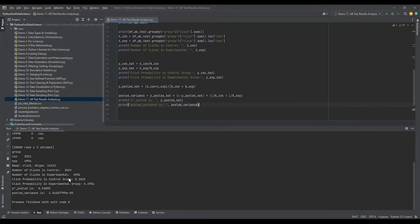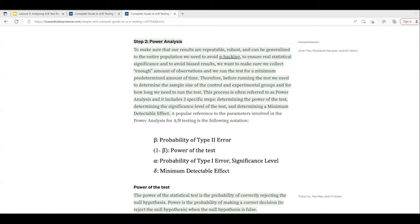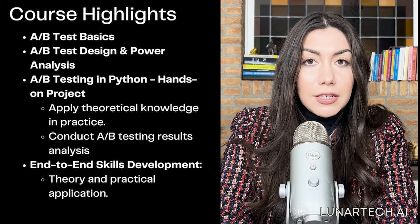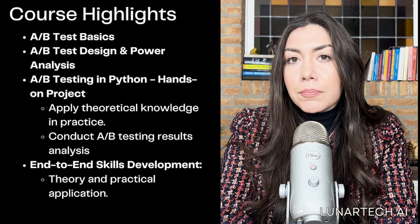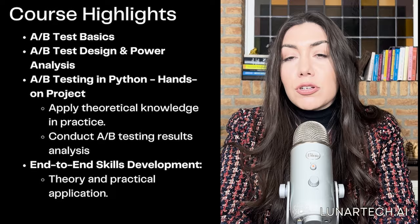In this crash course we are going to refresh our memory for the A/B test design including the power analysis and defining those different parameters such as minimum detectable effect, statistical significance level, and also the type 2 probability — the power of the test. Then we are going to do a hands-on case study project where we will be conducting an A/B testing results analysis in Python. At the end of this course you can expect to know everything about designing an A/B test and how to do A/B test results analysis in Python in a proper way.